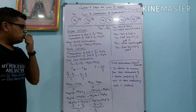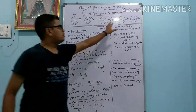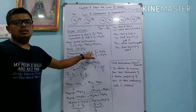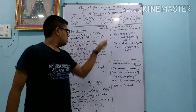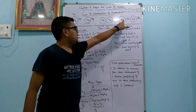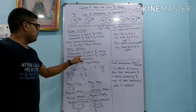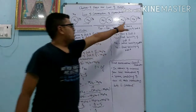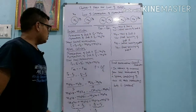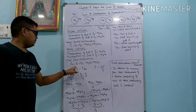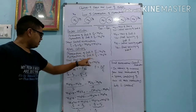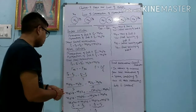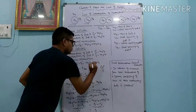Now dear students, we are going to find the momentum after collision. Momentum of ball A after collision is represented by PA dash. So PA dash equals to MA into VA. Momentum of ball B after collision equals to PB dash. PB dash equals to MB into VB. So total final momentum PF equals to PA dash plus PB dash, equals to MA·VA plus MB·VB.